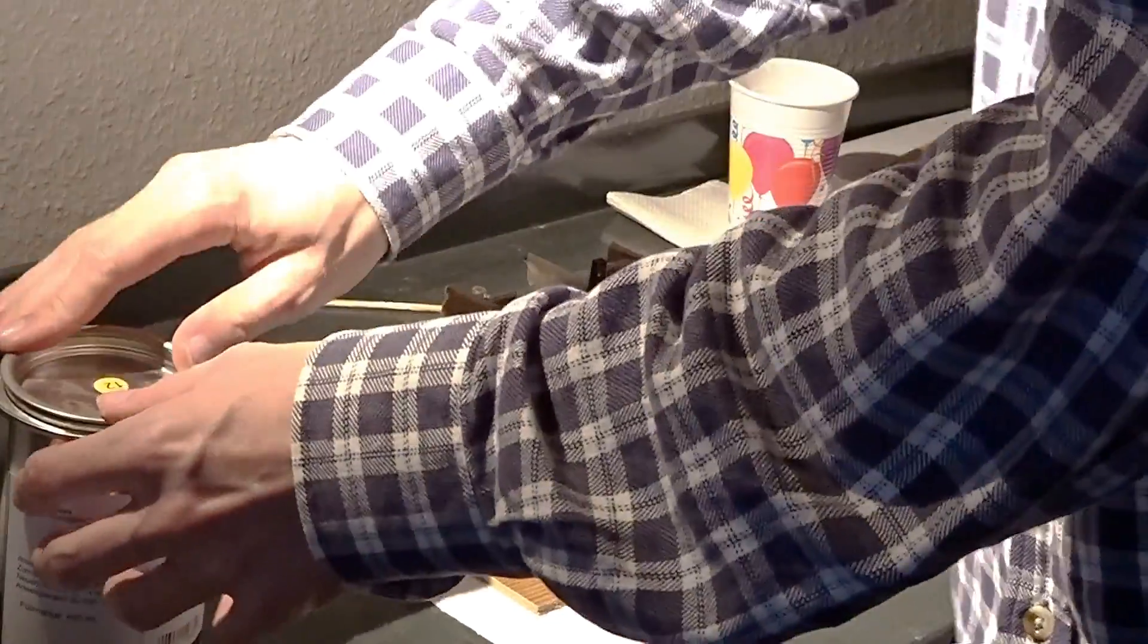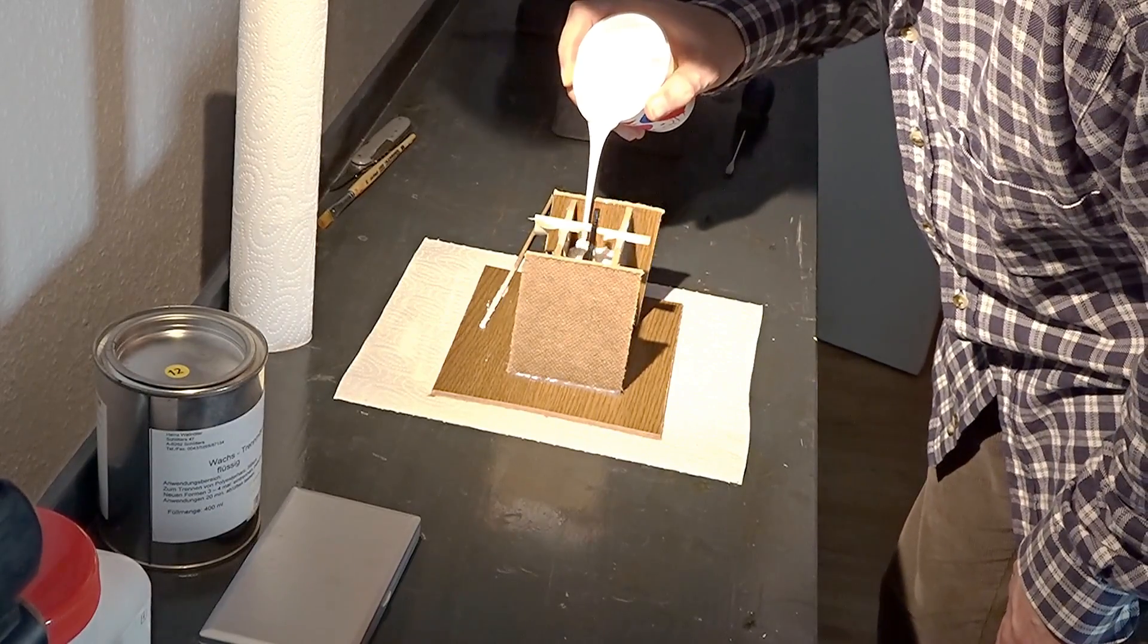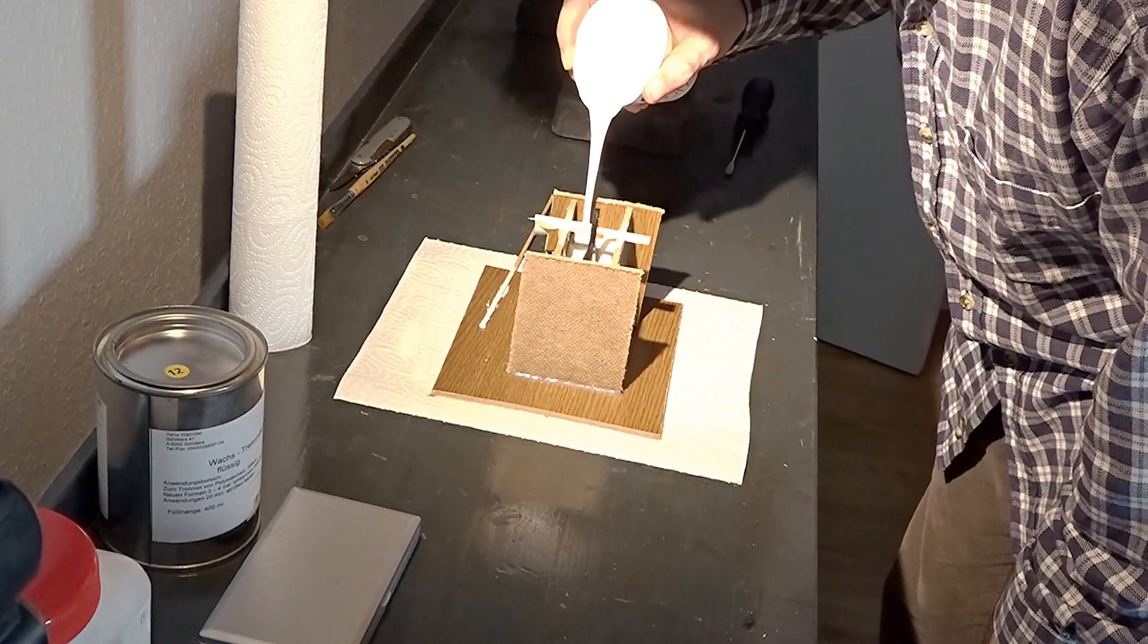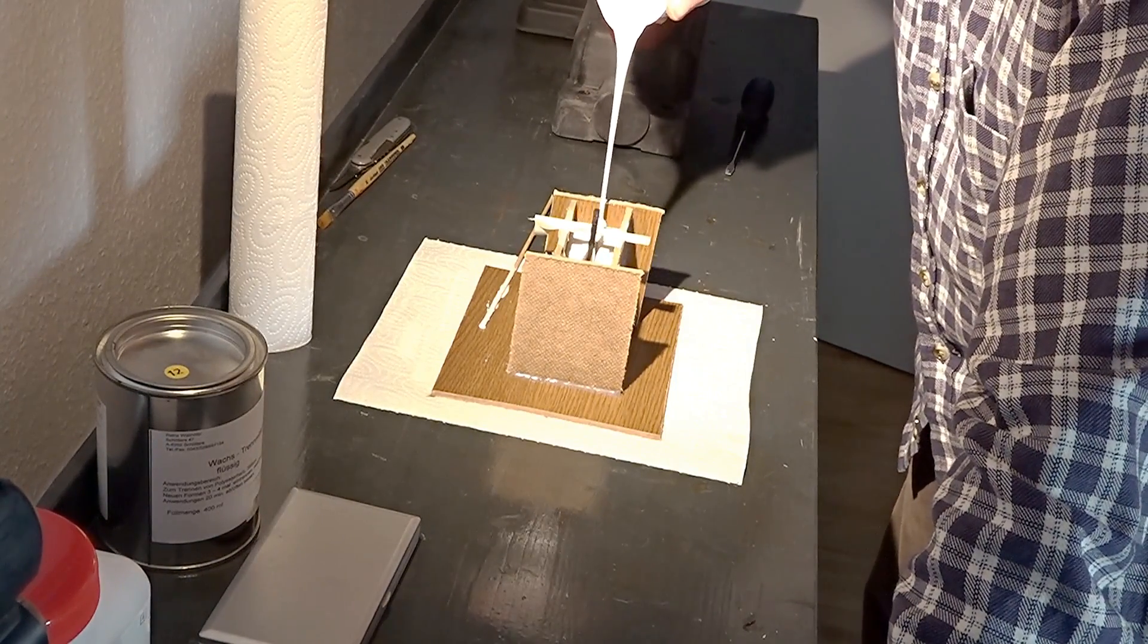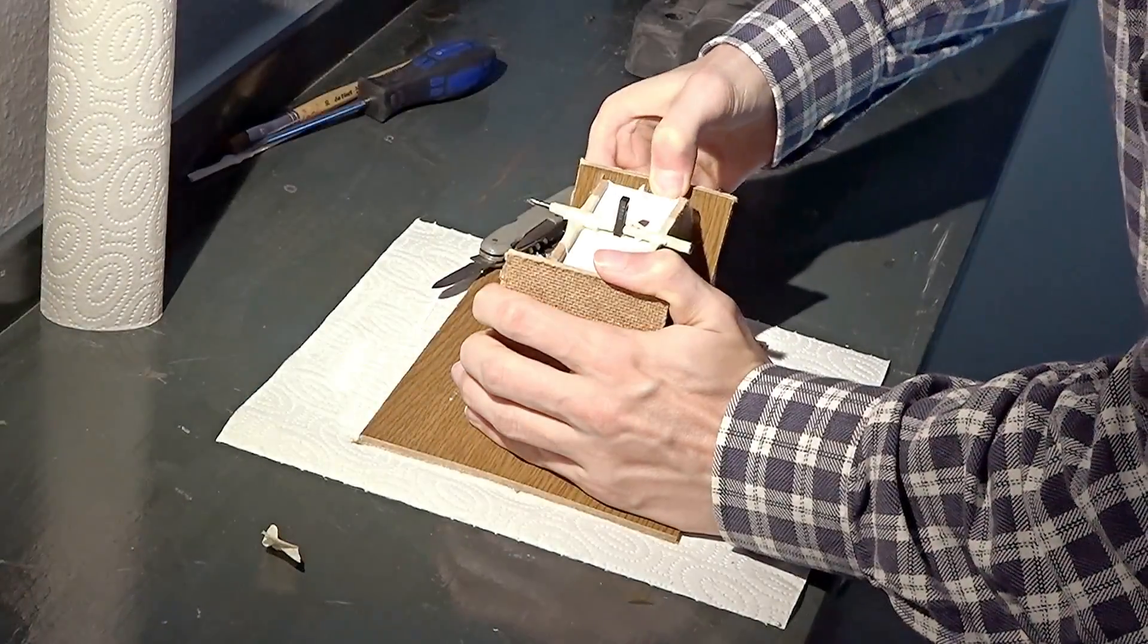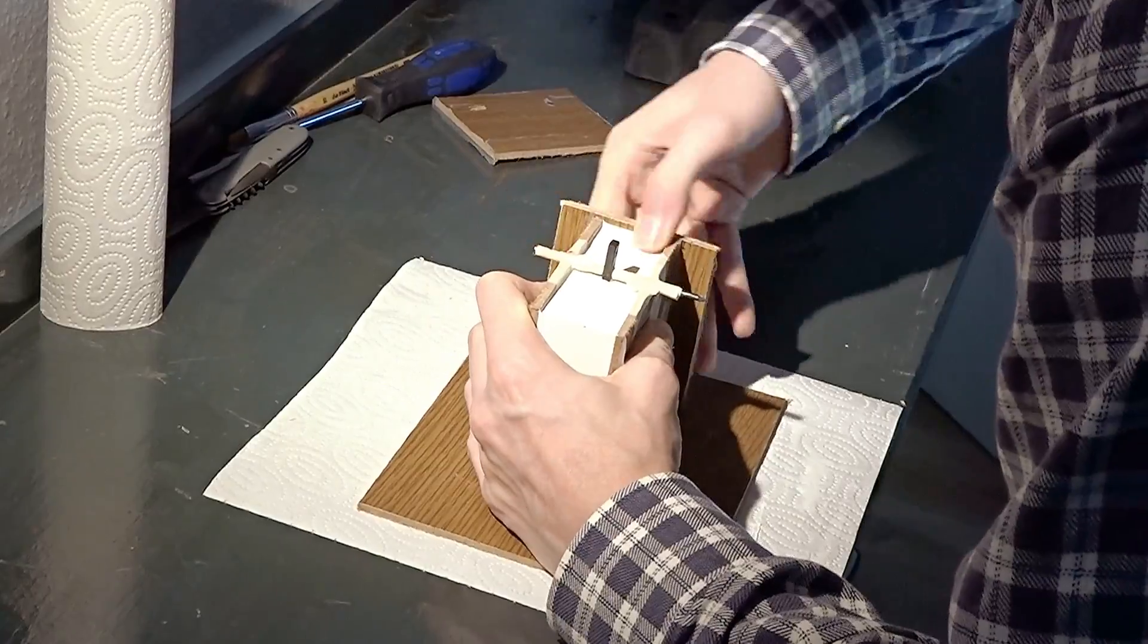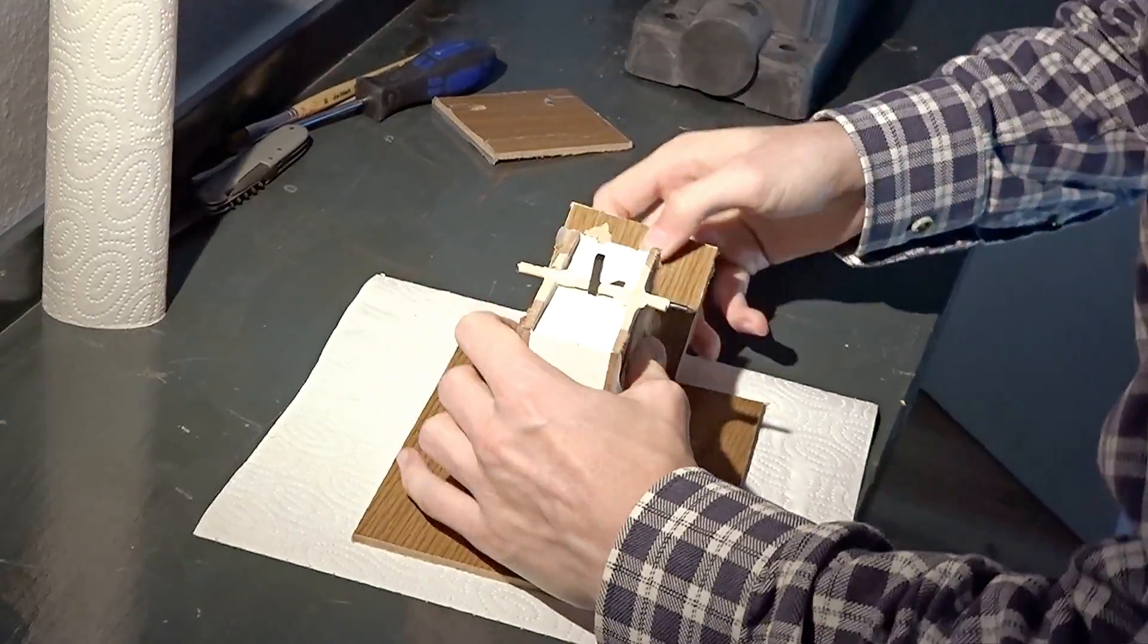And for the upper half you basically repeat the whole process. Meaning first to brush in the separation wax three or four times and then making a new cup of the rubber and pouring it in slowly just like before. After the second half has hardened, next step is of course to get it out of the box and to get the 3D printed shape out of the mold.